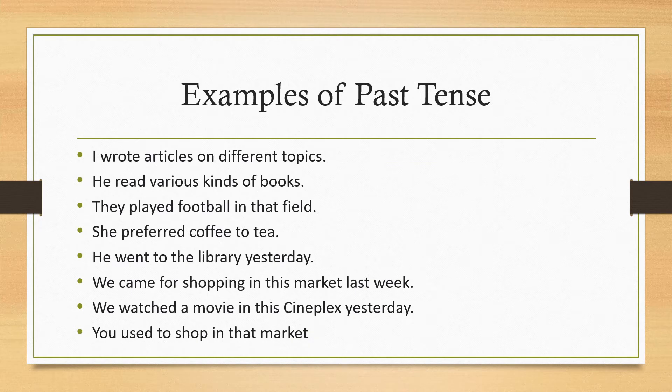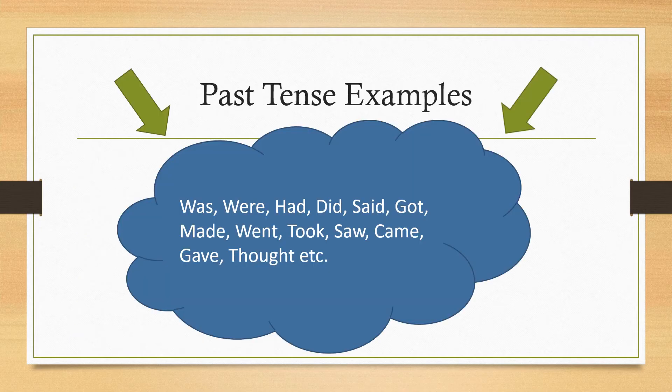Examples of past tense: I wrote articles on different topics. He read various kinds of books. They played football in that field. She preferred coffee to tea. He went to the library yesterday. We came for shopping in this market last week. We watched a movie in this cineplex yesterday. You used to shop in that market.